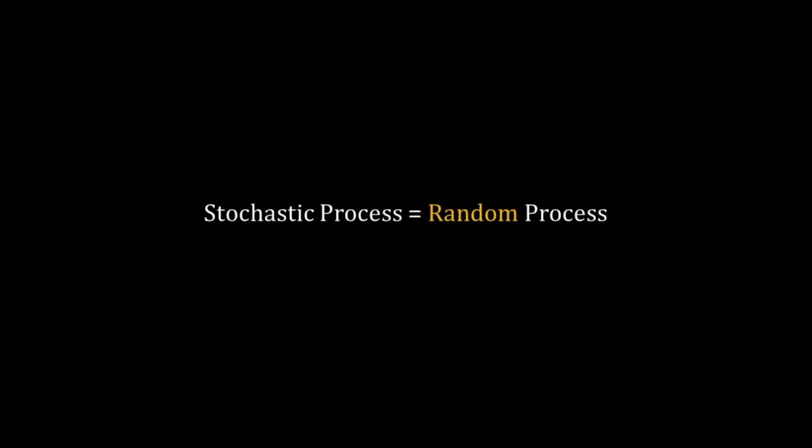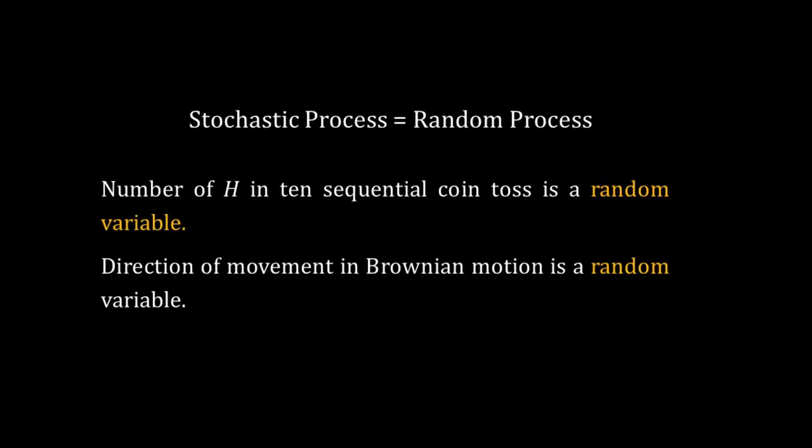A stochastic process is also called a random process. Variables in a stochastic process are random variables. For example, the number of heads often in 10 sequential coin tosses is a random variable. The direction of movement of a pollen in Brownian motion is also a random variable.